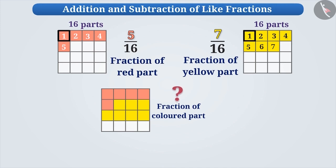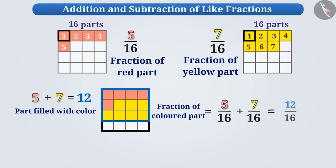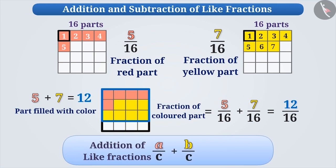Since the size of all parts is equal, we can find the number of coloured parts by adding the red coloured parts and yellow coloured parts. That is, we have to add the numerators of both fractions. Therefore, adding five parts and seven parts gives the answer twelve. That means we can say that twelve out of sixteen parts are filled with colour, so the fraction of the coloured part is twelve by sixteen. Thus, five by sixteen plus seven by sixteen is equal to twelve by sixteen.